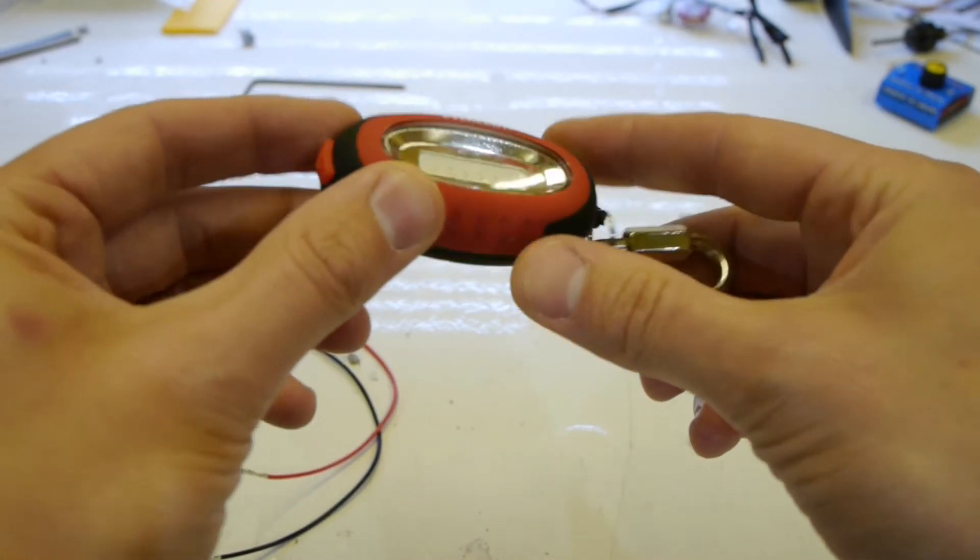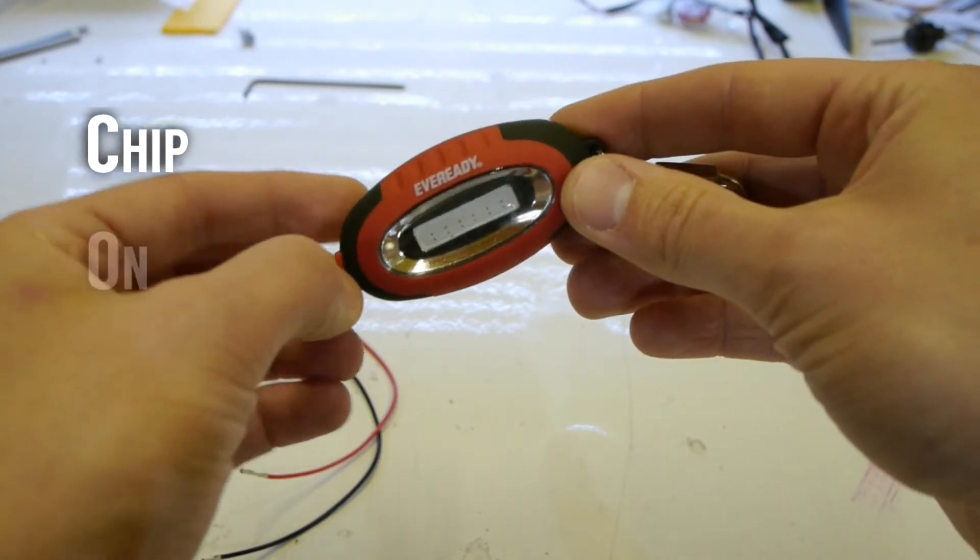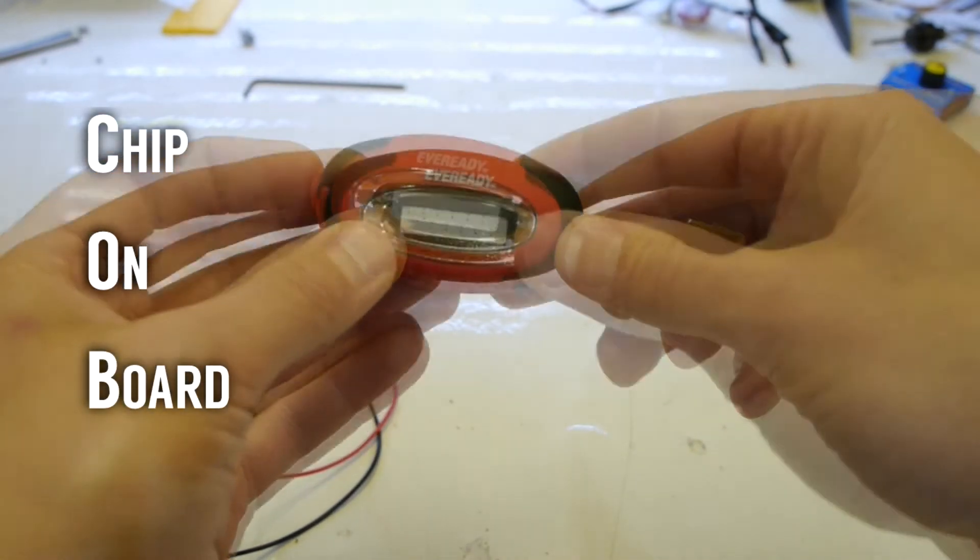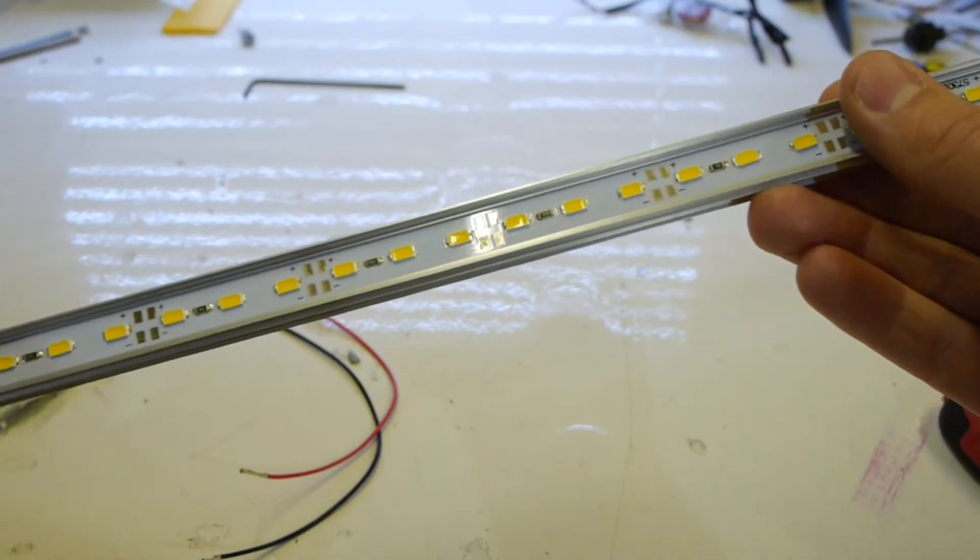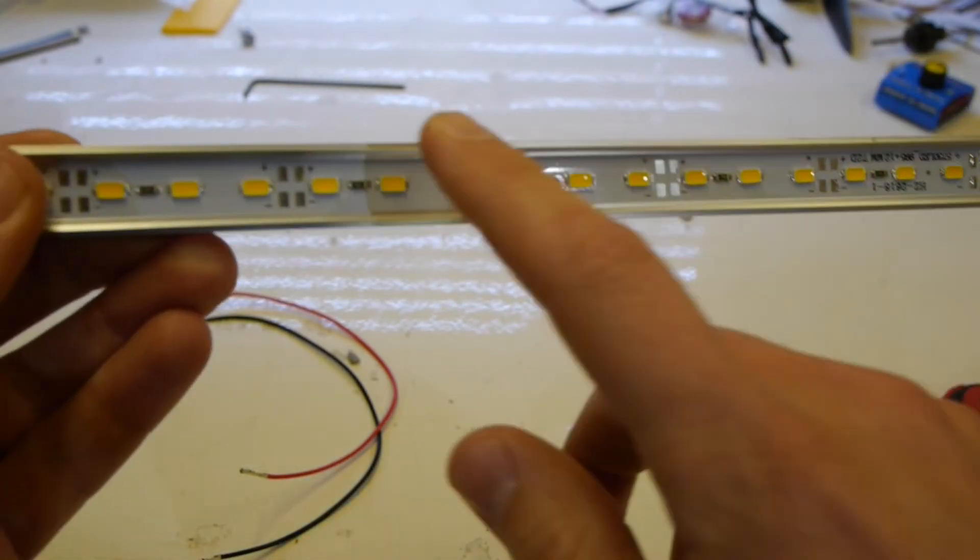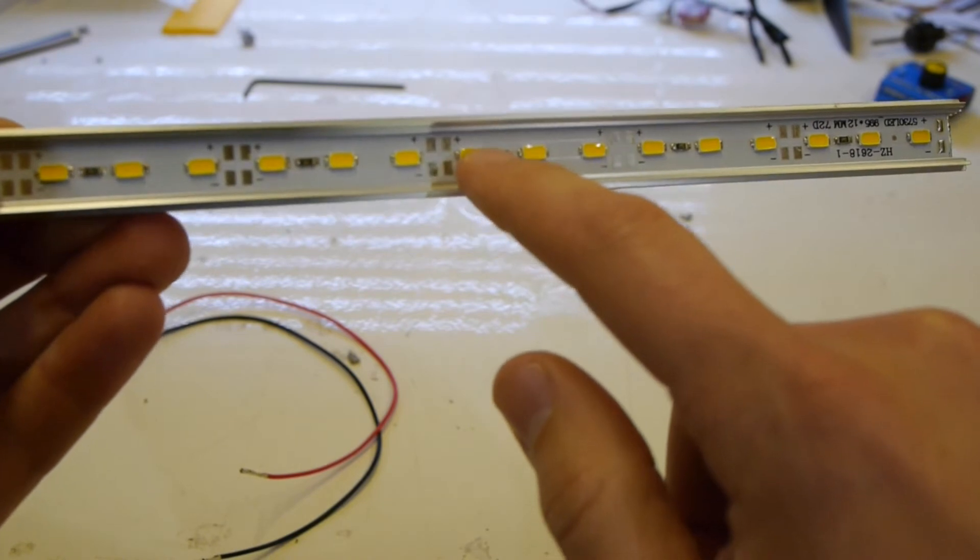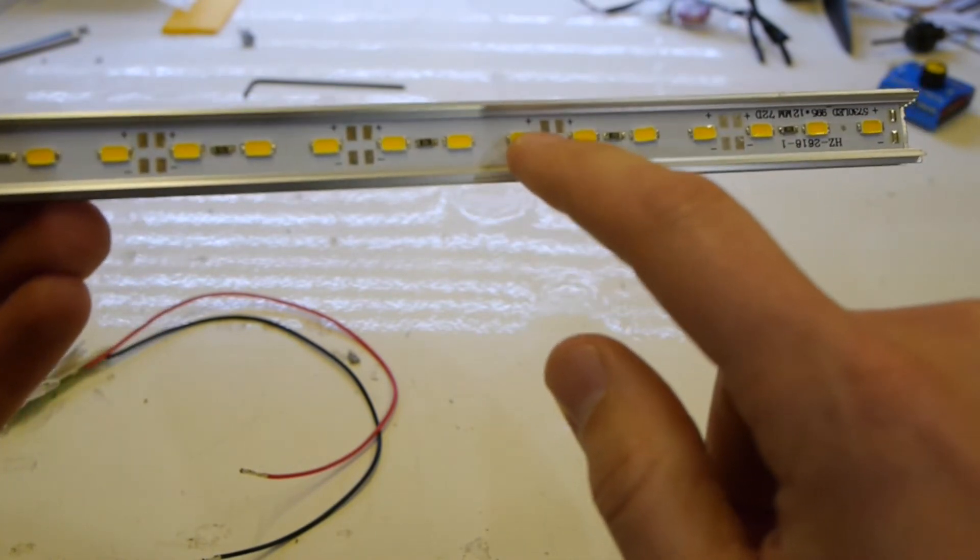So COB itself stands for chip on board LEDs. So if we look at more traditional LED strip you see there's each individual LED chip is packaged.